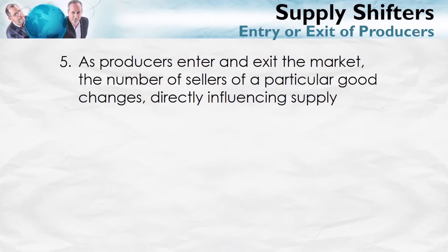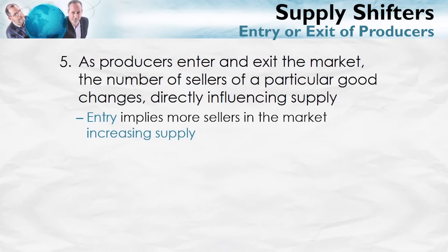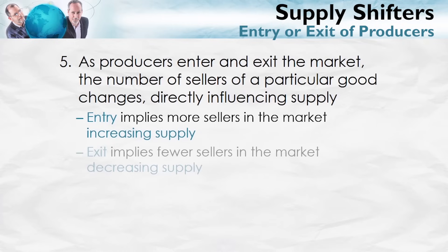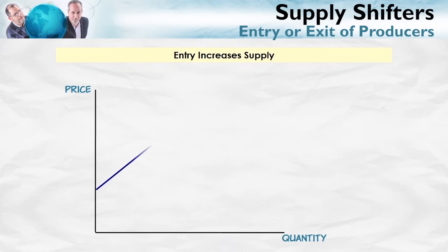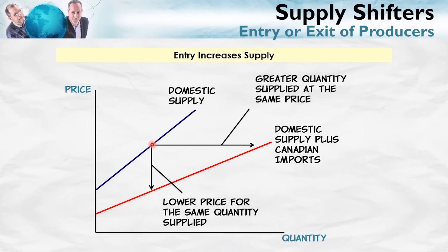The entry and exit of new producers is another important supply shifter. With entry, there are more sellers in the market — that increases supply. Exit implies fewer sellers, decreasing supply. What will happen to the supply of lumber with a free trade deal with Canada? Here's the domestic US supply curve without the free trade deal. Now with NAFTA, at any price there are more suppliers, so there's a greater quantity supplied at each price. In addition, Canadian firms will have lower costs, meaning at any quantity there's a lower required price. For exit, the process works in reverse.